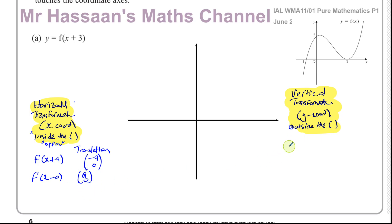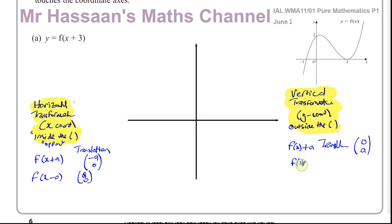If it's outside the function — f of x close bracket plus a — this is also a translation, but zero on x and plus a on y, so it moves up. f of x minus a outside would be a translation of zero, negative a — it moves down. So: plus a inside moves left; minus a inside moves right; plus a outside moves up; minus a outside moves down.